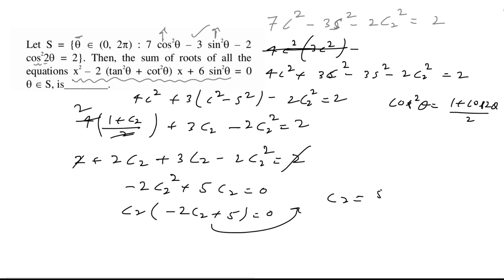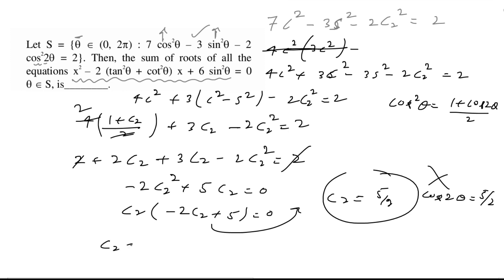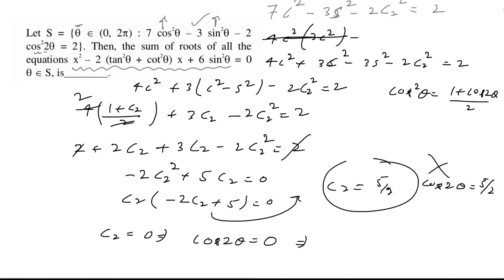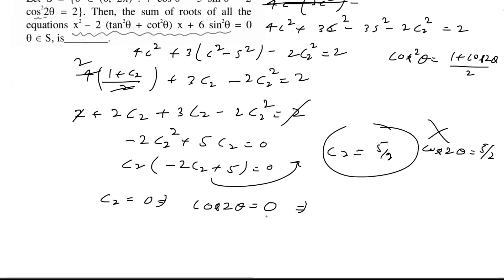Toh agar 0 se equate kiya toh c2 = 5/2 aata hai, yani cos2θ = 5/2 which is not possible. Toh fir doosra case: c2 = 0, that is cos2θ = 0. Ab cos2θ = 0 ke equal hai toh theta ki values 0 se 2π interval mein pata karni hain.